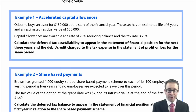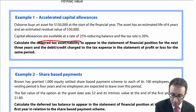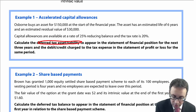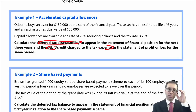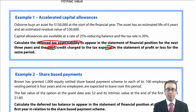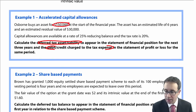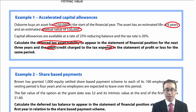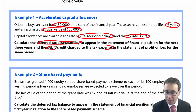The requirement is to calculate the deferred tax asset or liability to appear in the statement of financial position for the next three years, and the debit or credit charged to the tax expense in the statement of profit or loss for the same period. I'll work through two years — you can complete the third. Osborne buys an asset for $150,000 at the start of the financial year, with a life of six years and a residual value of $30,000. Capital allowances are available at 25% reducing balance and the tax rate is 20%.